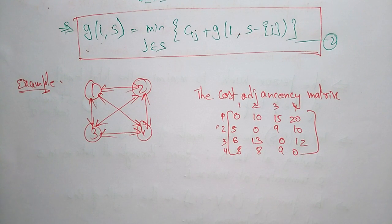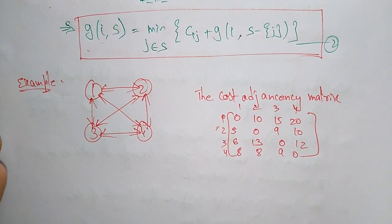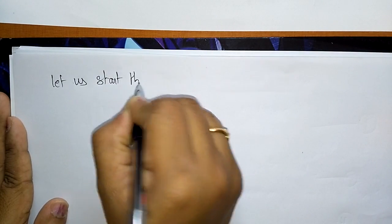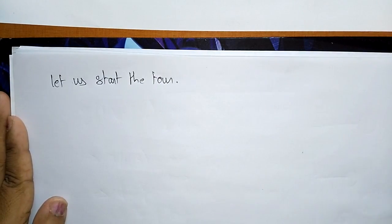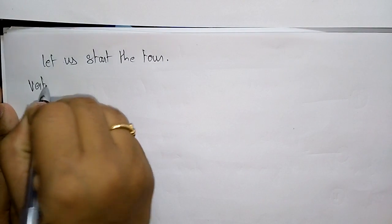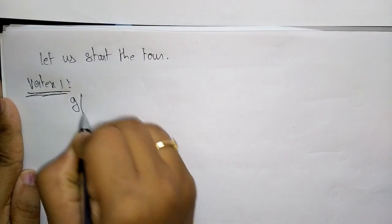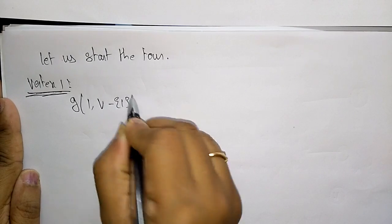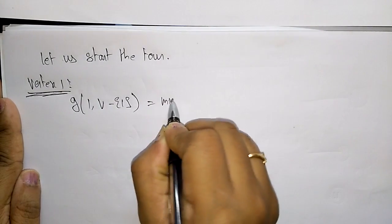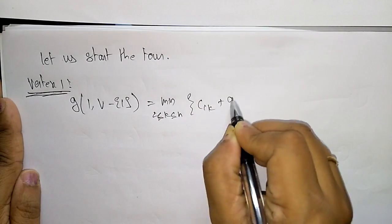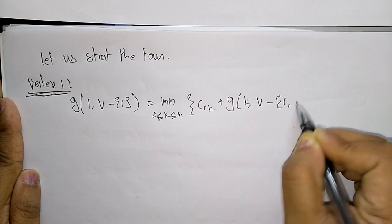From these values we have to find out the minimum cost tour. Let us start the problem. Starting from vertex one, I am directly applying the formula: g(1, V minus {1}) equals minimum over 2 ≤ k ≤ n of c(1,k) plus g(k, V minus {1} minus {k}).